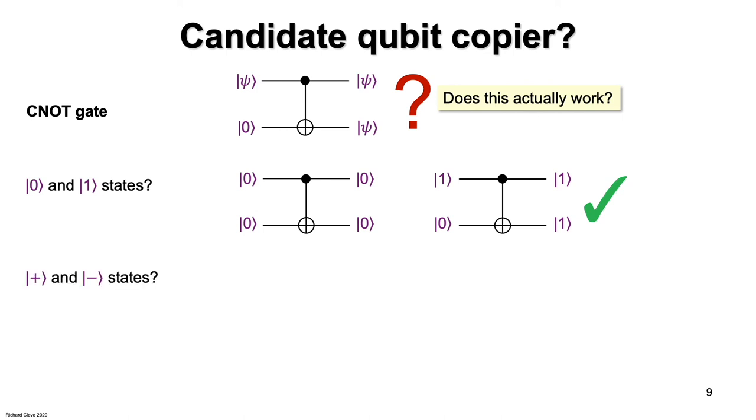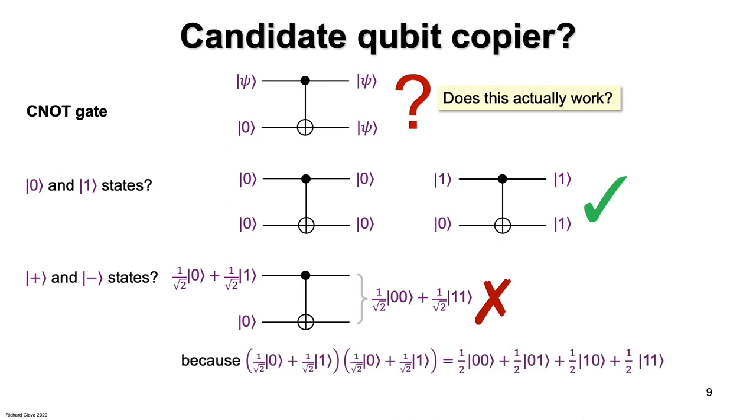Let's try the plus and minus states. What happens with the plus state? The plus state and ket 0, you apply a controlled NOT gate. What do you get? Well, you get a bell state. And is that two copies of the plus state? Nope. Because two copies of the plus state is this. And that's just a uniform superposition of all four computational basis states of two qubits. And that's not a bell state. So, nope, it doesn't work.